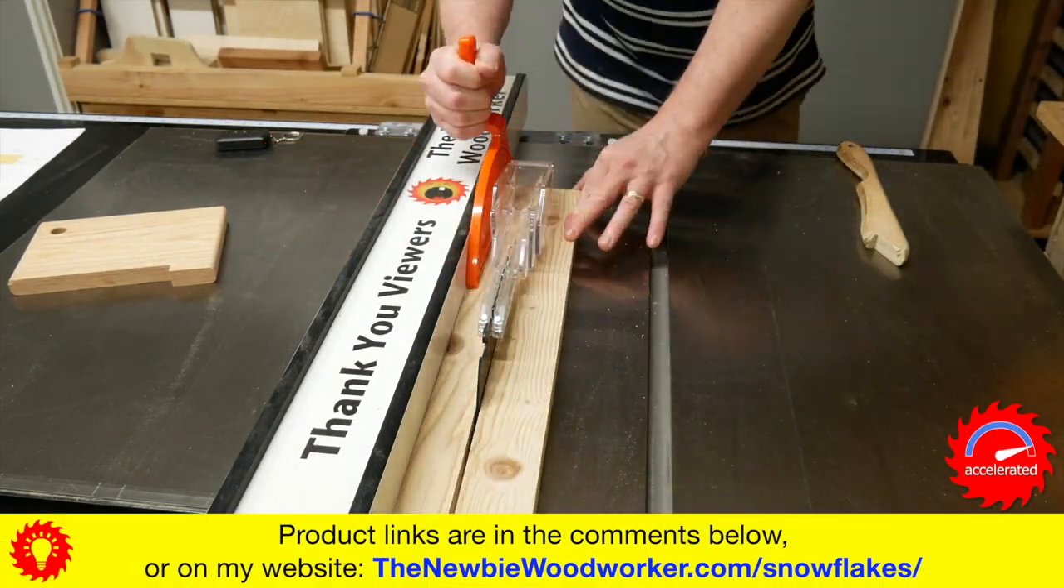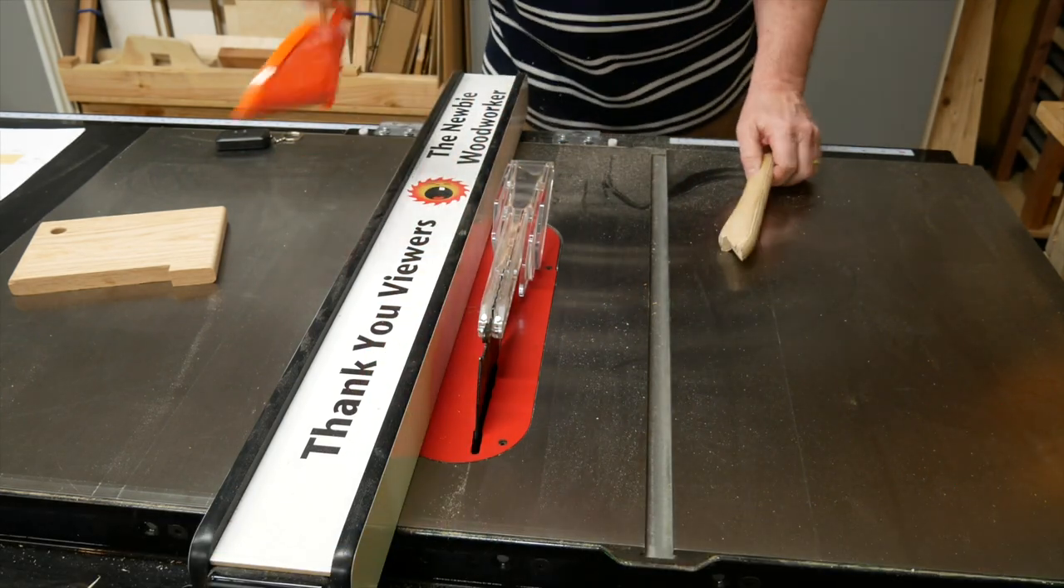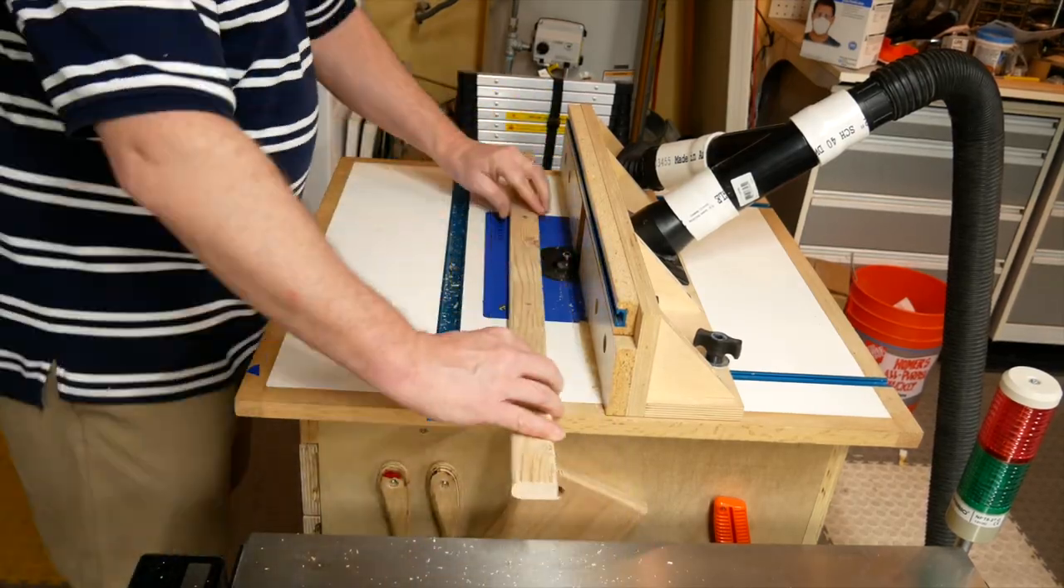The first step is to cut these three boards. I used my router table to round over the edges, but I don't like the results. This is the first of many things I'll do differently for the next snowflake, which I'll be making after I get this video out. For the next one, I'll just do some minor sanding to soften the edges a little.